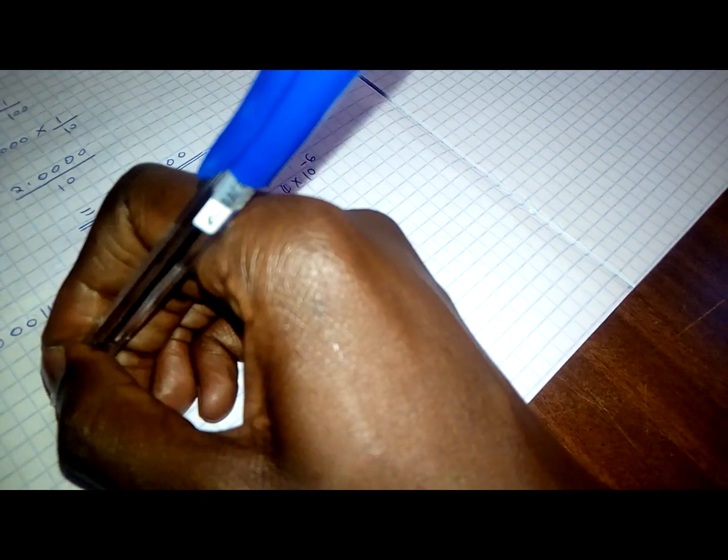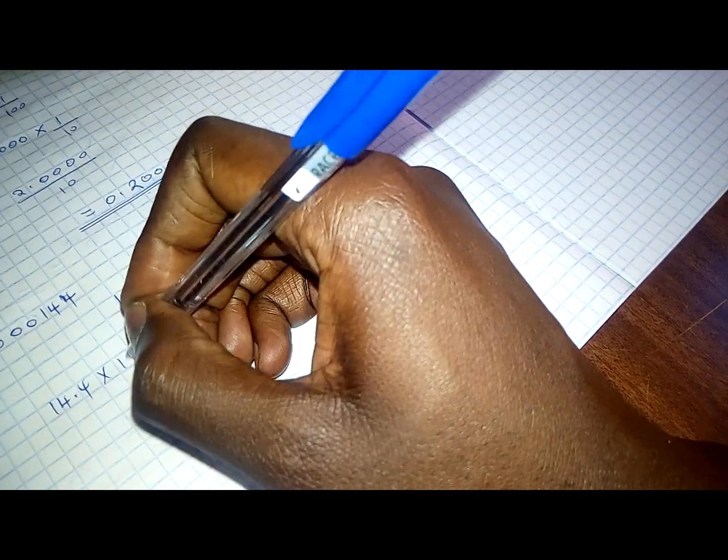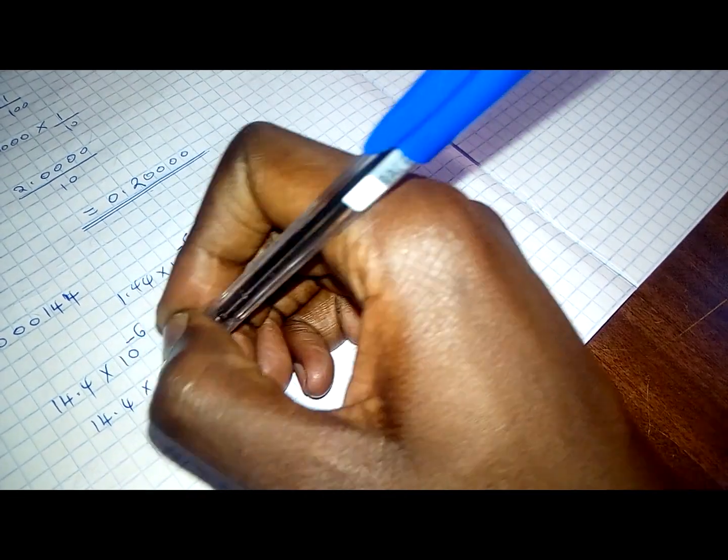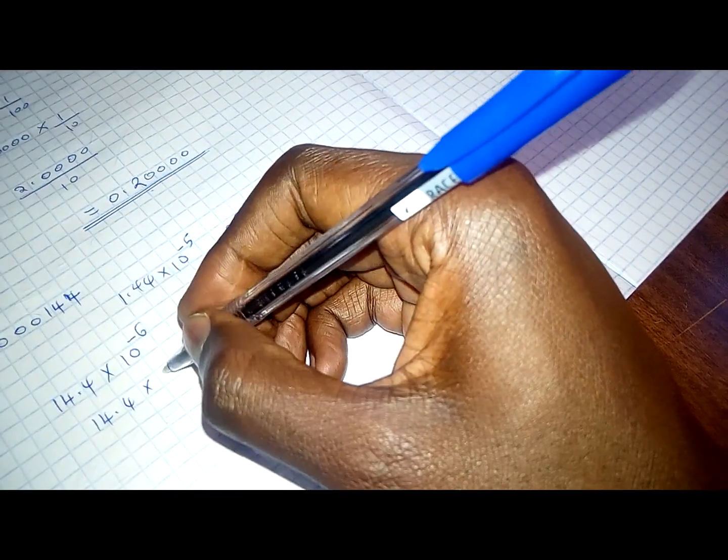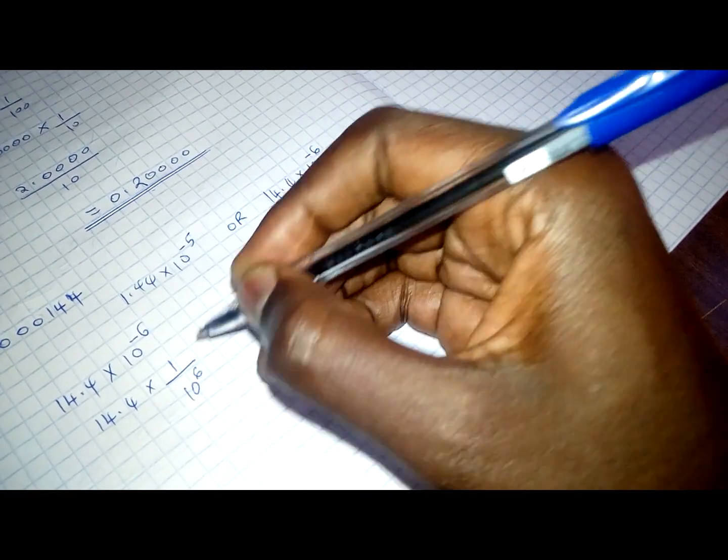So, we are going to look at the square root of 14.4. Then, we multiply by the square root of 10 to negative 6. So, this is just the same as 14.4 times. This can be written as 1 over 10 to the power of 6.